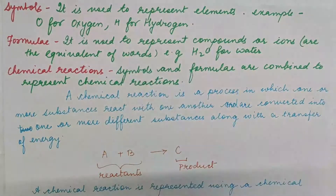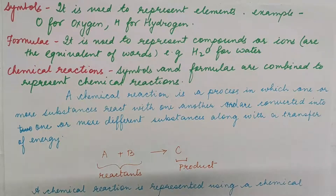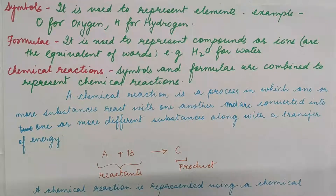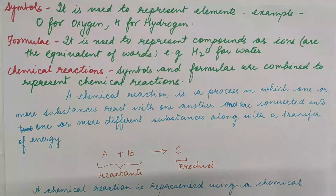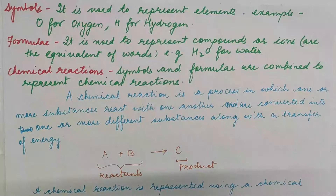With the formulas you are going to make chemical reactions. Symbols and formulas are combined to represent chemical reactions. Chemistry is a study of various kinds of reactions, and we need to write a lot of chemical equations in a chemistry lab. So it is very important to understand the use of symbols and formulas to represent chemical reactions.